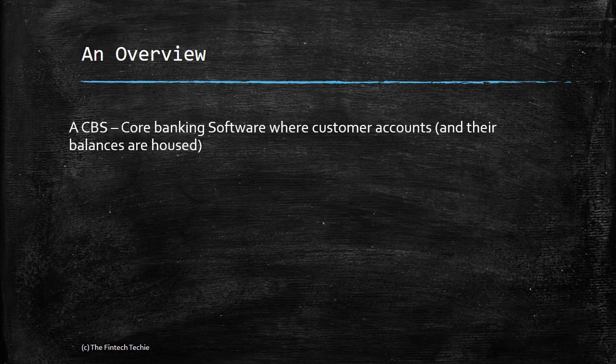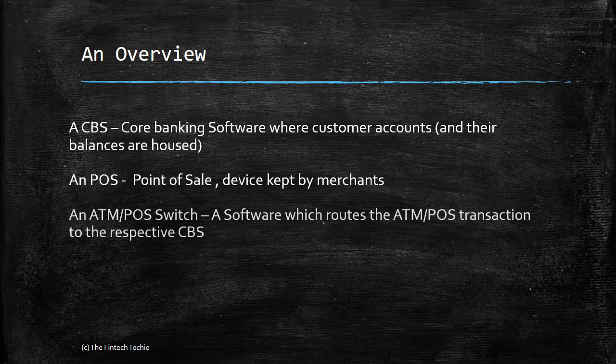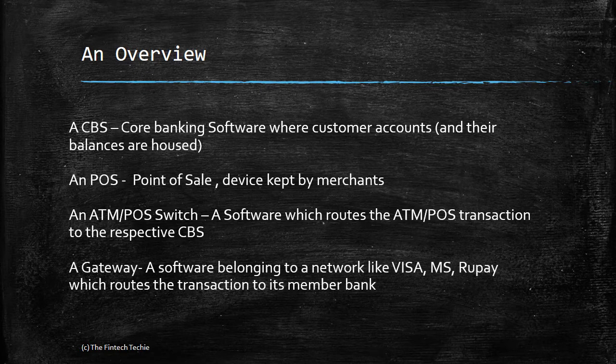A quick recap of the components: CBS, or core banking software, includes systems like Finacle, Temenos, and FlexCube — it houses customer account balances. Next is the POS device, the point-of-sale machine kept by merchants. The ATM or POS switching machine accepts requests from the point of sale and routes them to the core banking. Finally, there is the gateway, a software belonging to networks like Visa, MasterCard, and RuPay.